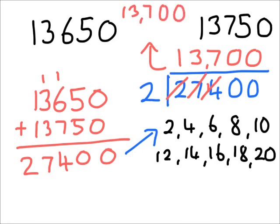Just to recap on those steps one final time. To find a halfway number — a number that's exactly in the middle — step one: we add the numbers, or we find the sum of the numbers; both mean the same thing. Then we half it, and halving a number means we divide it by two. Our answer to that second part of the calculation is our halfway number — our number exactly in the middle. I hope this video was useful — thank you very much for watching.